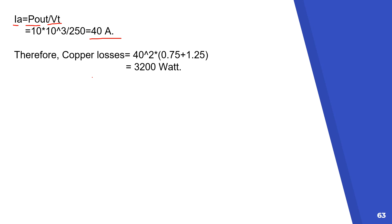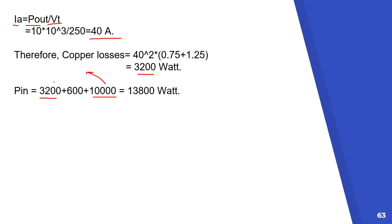The copper losses will be I squared — 40 squared multiplied by the total resistance R_A plus R_F — giving us 3.2 kilowatt. Adding the copper losses to the 10 kilowatt power output gives us the developed power of 13.2 kilowatt. Then adding the iron and friction losses of 600 watts gives us the total input mechanical power of 13.8 kilowatt.